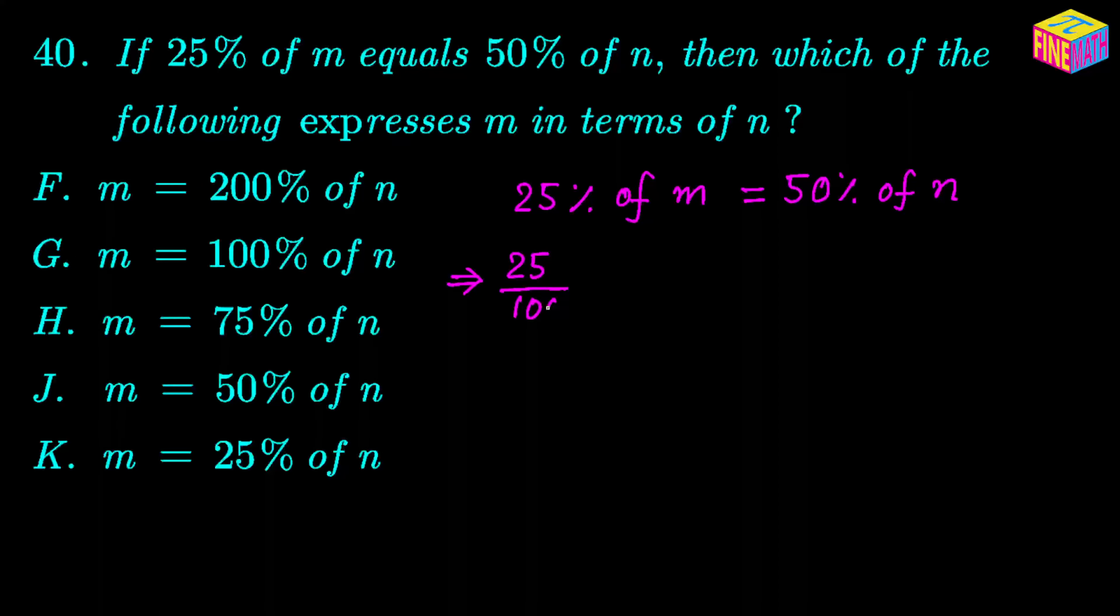So 25 per 100 or 25 divided by 100, that is 25%. And then 'of' is the word which can be replaced by a multiplication sign. So in both cases, wherever we have 'of', it can be replaced with a multiplication sign.